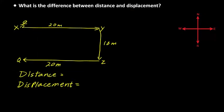Now let's see if you understand the difference between distance and displacement. Here is a situation: you start at point X and walk 20 meters to point Y, then turn south and walk 10 meters to point O, then turn and walk 20 meters west to point Q, where you stop. Your origin is at X and your final destination is at Q. What is your distance and what is your displacement? Go ahead, pause the video, solve the problem, then turn it back on.